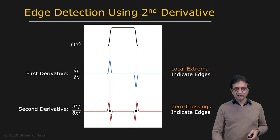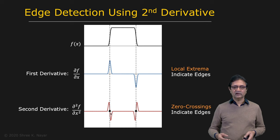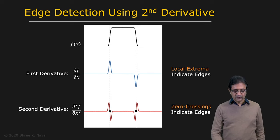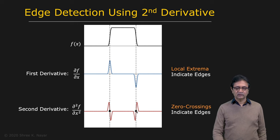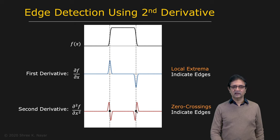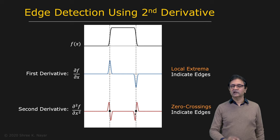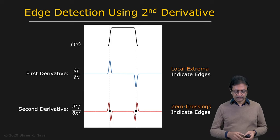So what's interesting about the second derivative of f with respect to x is that at the edges, you do not get peaks — you get zeros, but you get very strong zero crossings. And if you can detect these zero crossings, wherever there is a zero crossing, you have an edge.